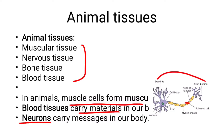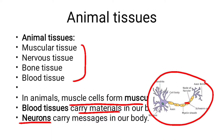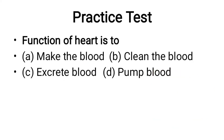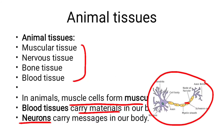Muscle cells, nerve cells, and brain cells are all types of neurons. This concludes the lecture content.